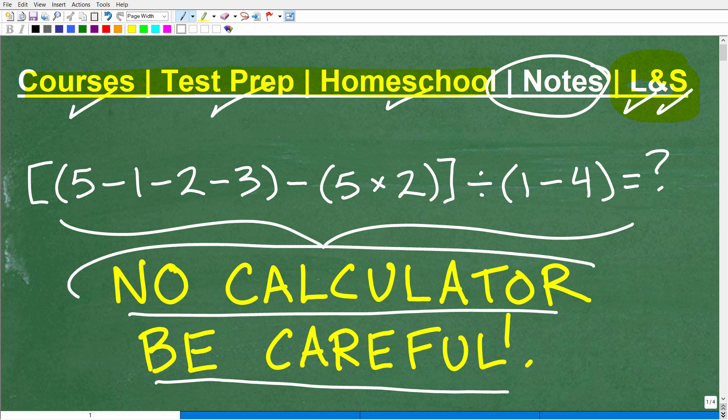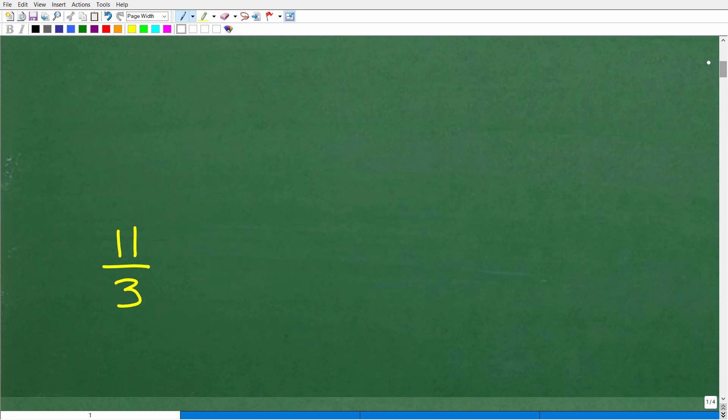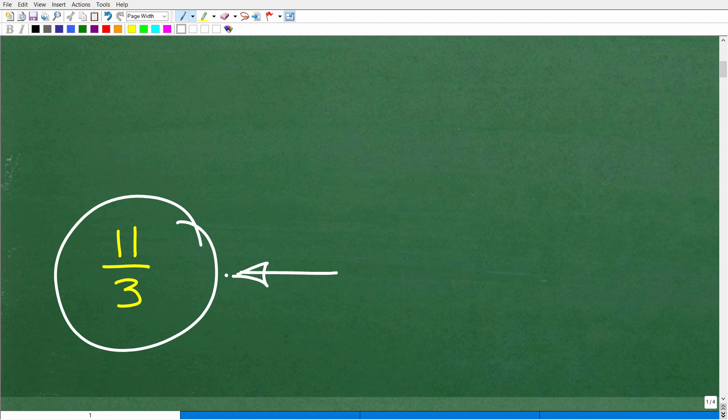Now again, don't use your calculator. I know some of you are tempted, but put that thing away for a second. Just get yourself a piece of paper and pencil. And if you did this number crunching correct, you should end up with this right here, a positive 11 over 3 or 11 thirds. So how did you do? Well, if you got this right, let's go ahead and celebrate by giving you a nice little happy face and A+, a 100%, and multiple stars.